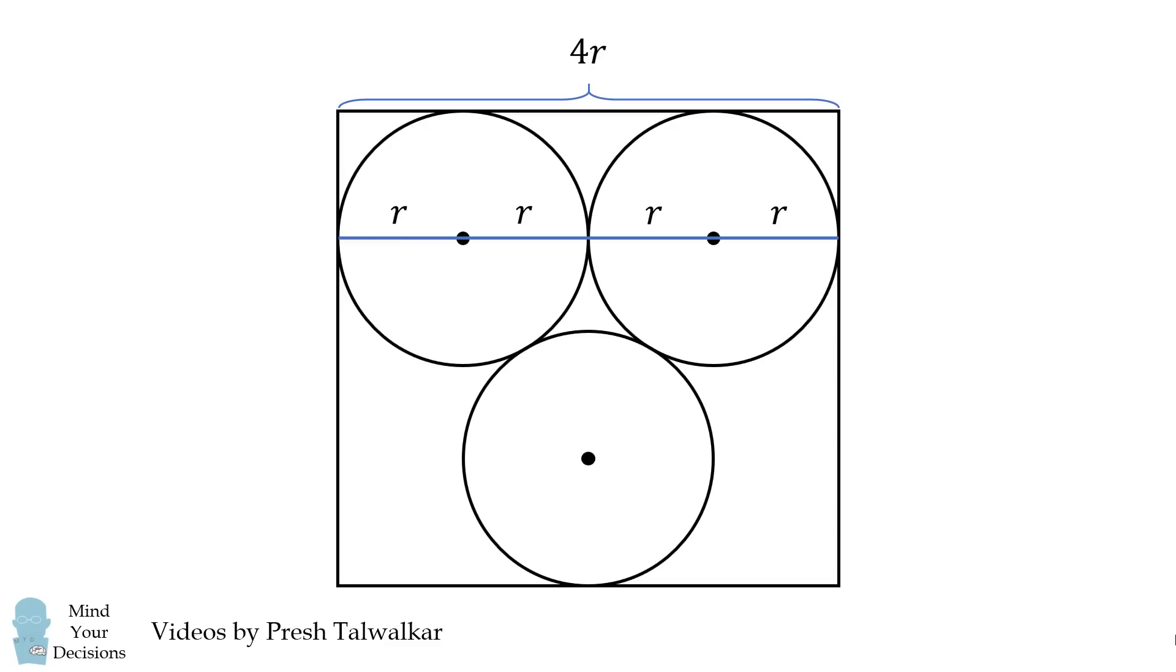Now let's calculate the length of the other side. We'll draw in the radii of these circles, and notice we're going to form an equilateral triangle with a side length of 2r. This means each angle is equal to 60 degrees.